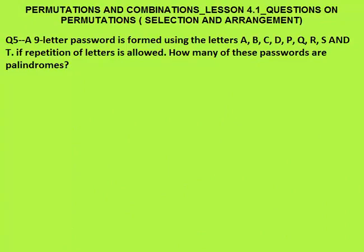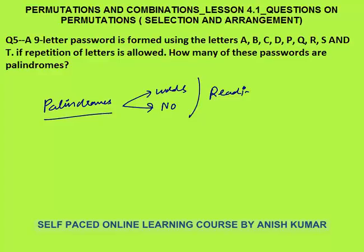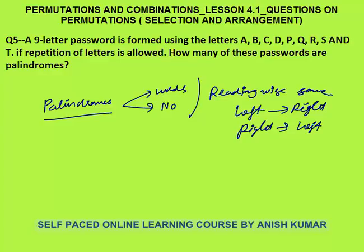Question 5: a 9-letter word is formed using the letters A, B, C, D, P, Q, R, S, and T. If repetition is allowed, how many of these passwords are palindromes? A palindrome is a word or number that reads the same from left to right as from right to left. For example, NITIN reads the same forwards and backwards. ABBA is also a palindrome. Numbers like 12321 are palindromes — reading left to right gives 12321, and right to left also gives 12321.